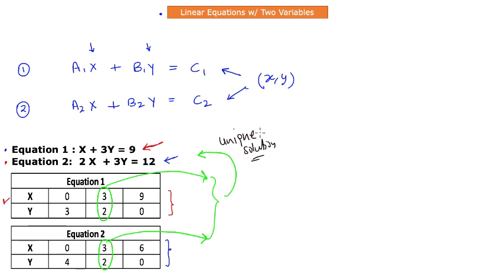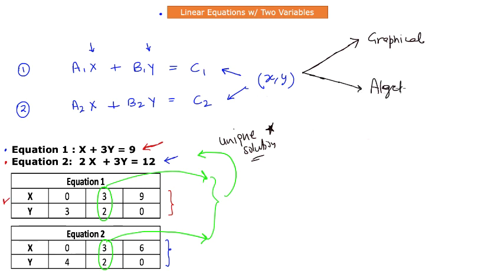Given this knowledge about finding a unique solution, there could be two different methods. One method is what is known as a graphical method. And the second method is known as the use of algebraic techniques. Each one of those techniques we will study in more detail. But the premise in both of these techniques is to find that one common point, or one common pair of values, that satisfies both of these equations.